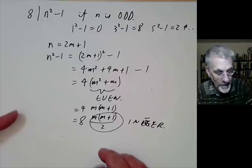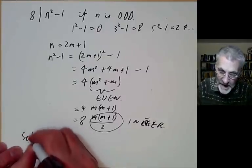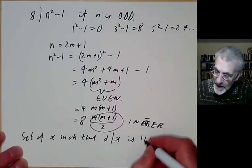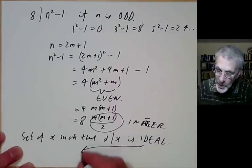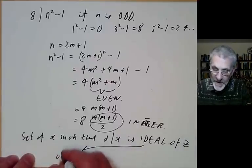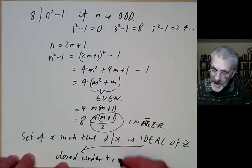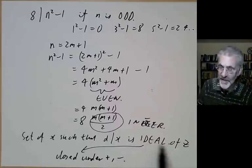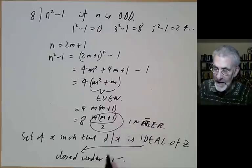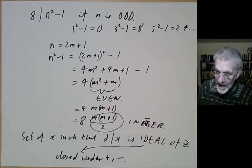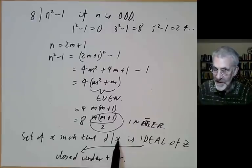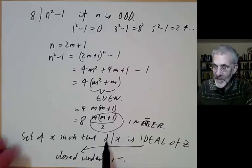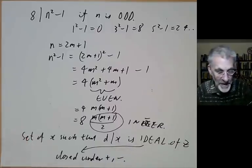Next, note that the set of x such that d divides x is called an ideal of the integers. An ideal of the integers is closed under addition and subtraction. For general rings the definition is more complicated, but for the integers this simple definition suffices. It's obvious because if two numbers x and y are divisible by d, then their sum and difference are also divisible by d. So the set of multiples of any integer is always an ideal, closed under addition and subtraction.